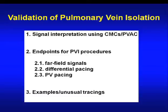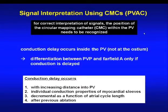My presentation will focus on signal interpretation using the PVAC, then endpoints for PV isolation, and the PV pacing part. For correct interpretation of signals, the position of a circular mapping catheter within the pulmonary veins needs to be recognized, because the conduction delay occurs inside the pulmonary vein, not at the ostium. To differentiate a local PV potential from a far-field atrial signal, you need some conduction delay, which is a function of distance from the pulmonary vein.